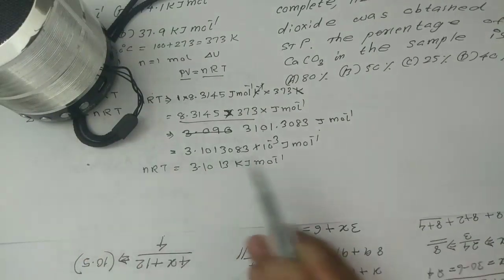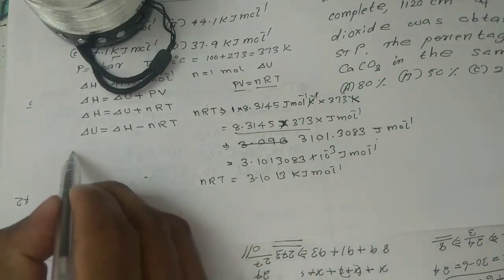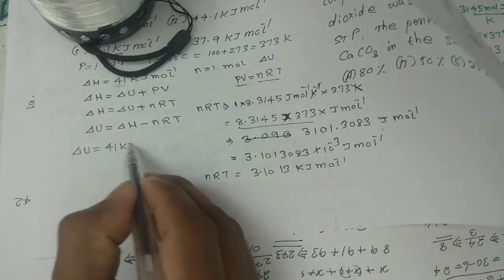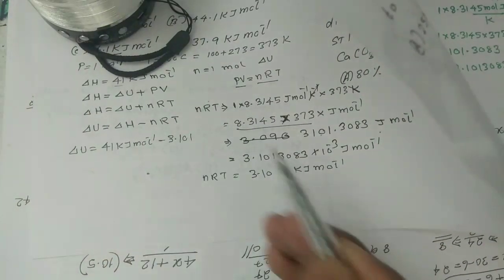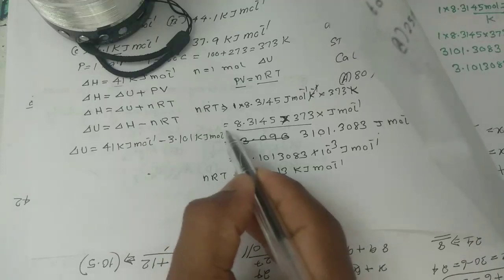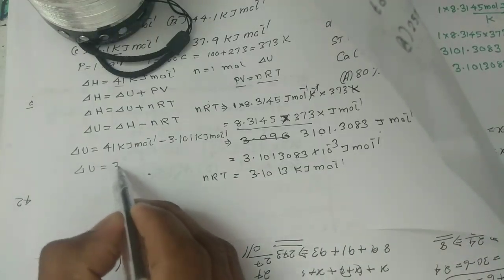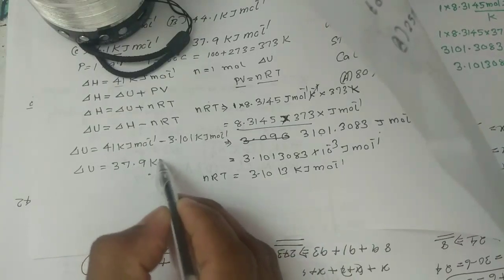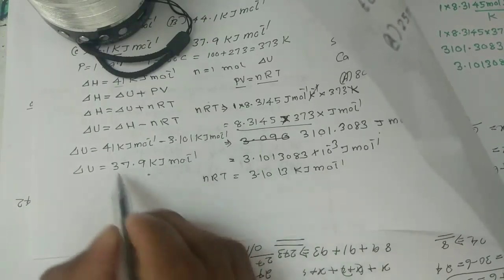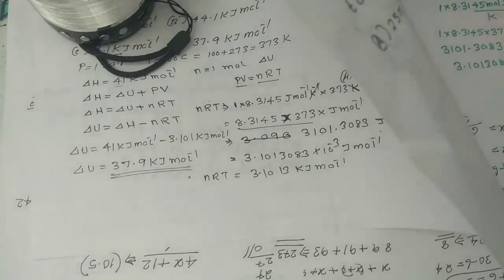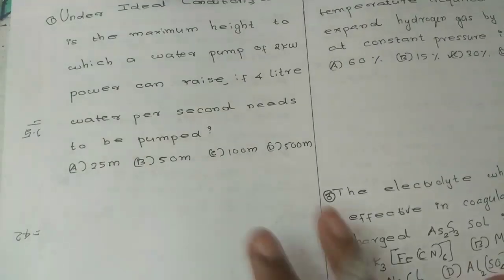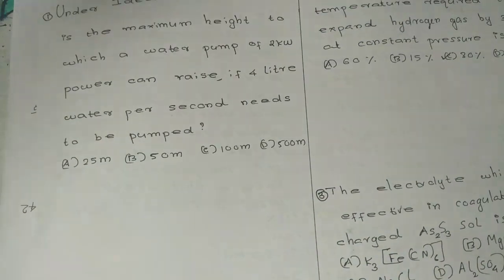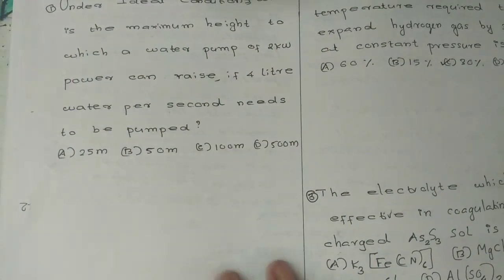After substitution, delta U comes out to approximately 37.90 kilojoule mol raised to minus 1. That is the answer for the first problem. Now moving to the next question: under ideal conditions, what is the maximum height to which a water pump of 2 kilowatt power can raise 4 liters of water per second?